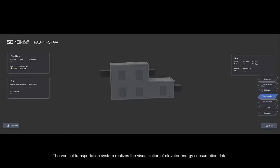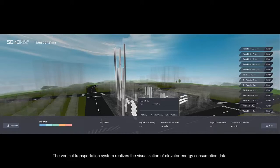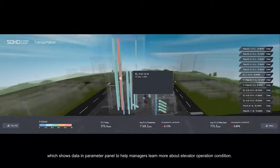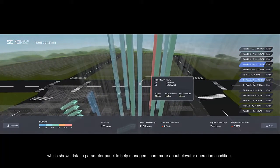The vertical transportation system realizes the visualization of elevator energy consumption data by combining it with the model using the dyeing method, which shows data in parameter panels to help managers learn more about elevator operation conditions.